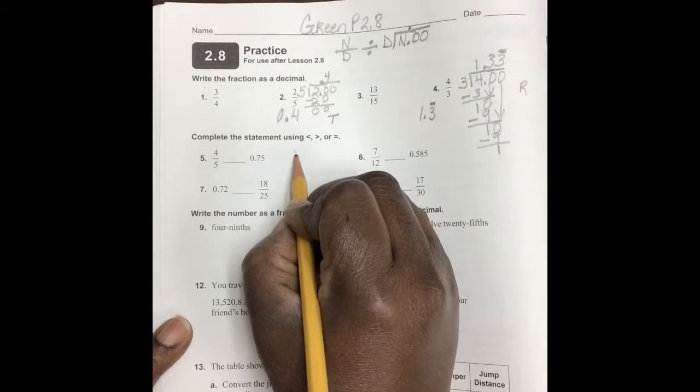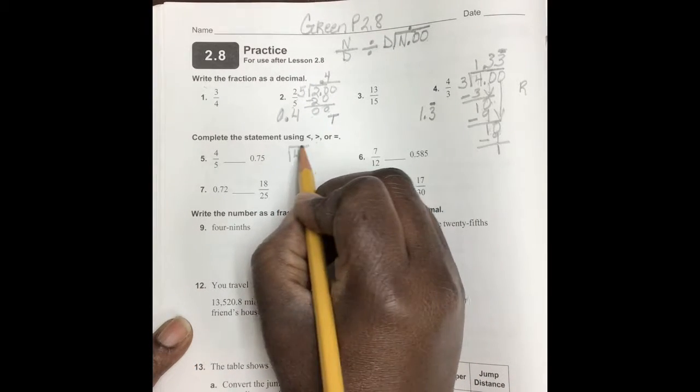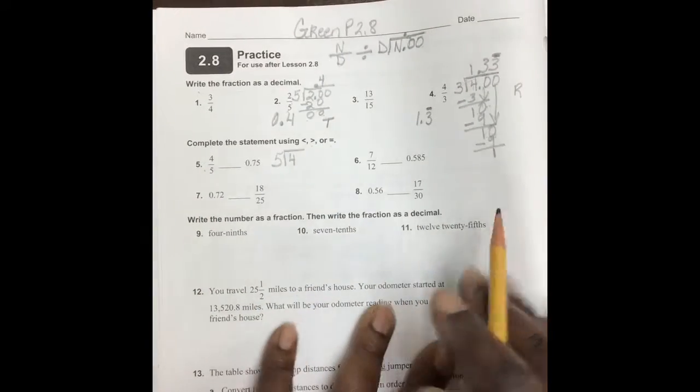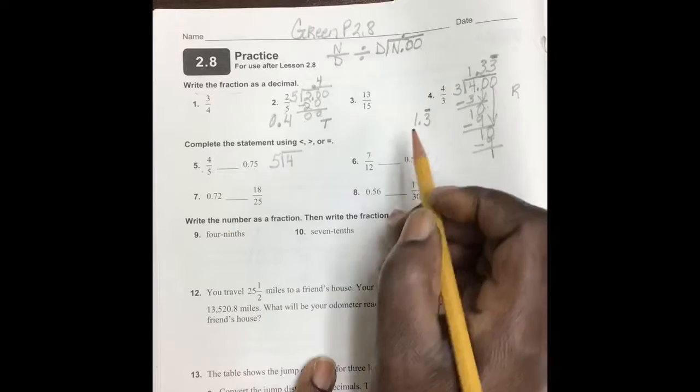Our numerator, 4, divided by our denominator, 5. This is an odd number. That's for you. I'm going to move over to number 6, the even number.